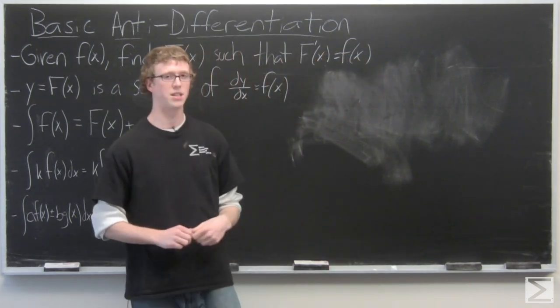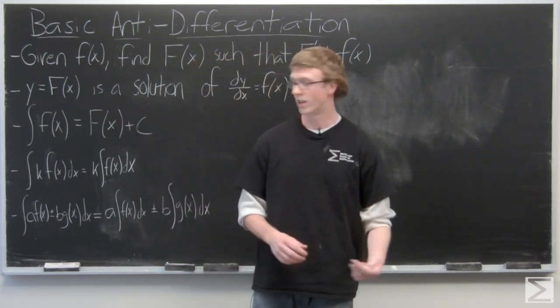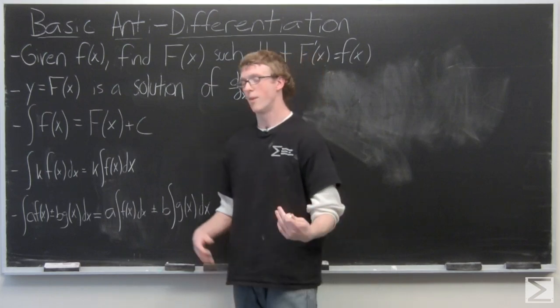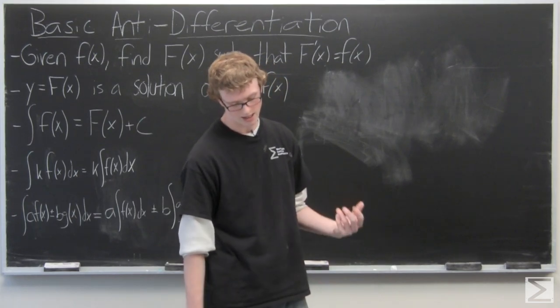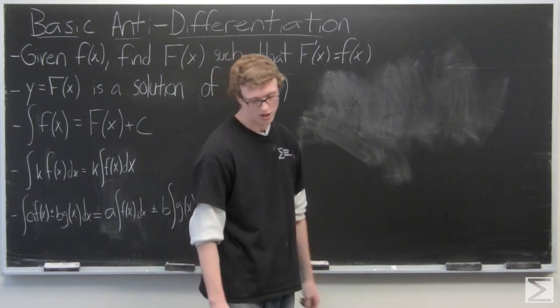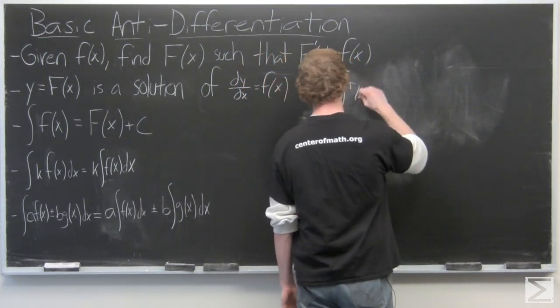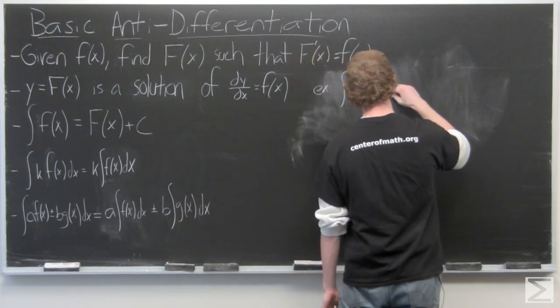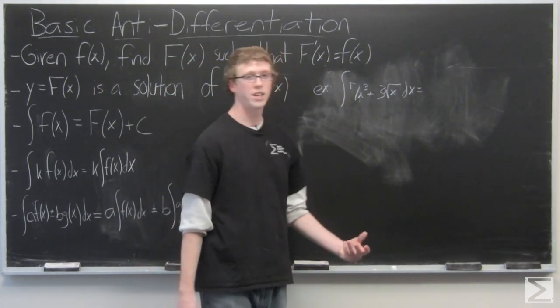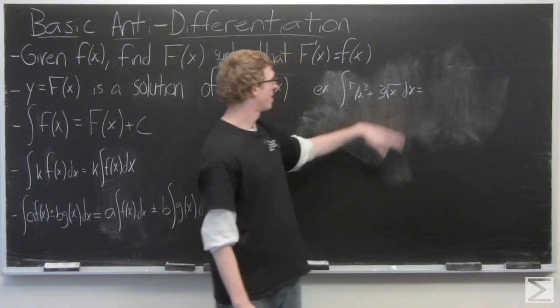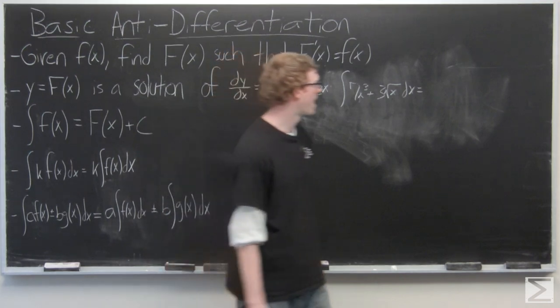Now we're going to take a look at just some basic examples of anti-differentiation or integration without bounds and then later on we're going to take a look at definite integration. In this case this might be referred to as indefinite integration. The first function we're going to take a look at is integrate 7x^3 plus 3√x dx. I'm going to use the linearity of integration rule to break this apart and separate the constants to the outside and I'm also going to change that square root of x to an x^(1/2).